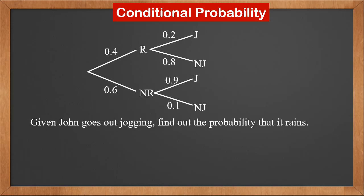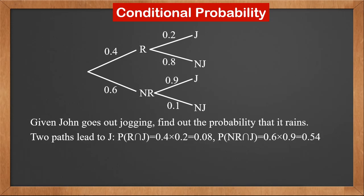Given John goes out jogging, find out the probability that it rains. We can see that two paths lead to J. One is R-J, and the other is NR-J. The first path gives the probability of R and J. This is 0.4 times 0.2, which is 0.08.